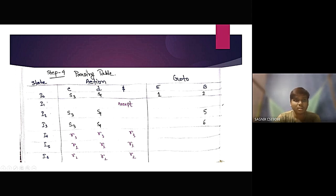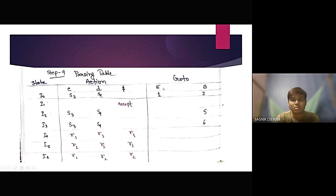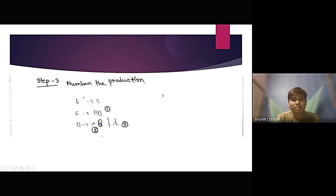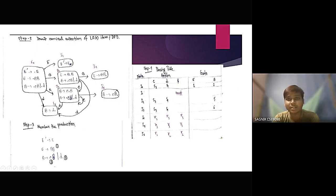In the parsing table, for state I0, E goes to I1, so we write 1 in the go-to column under E. For B, we give it state 2. From I1, there is no output so it is blank. From I2, it defines BB dot, so we give it state 5. The C from I2 passes to I3, so from I2 under C the action is S3. The D part goes to I4, so we write S4.